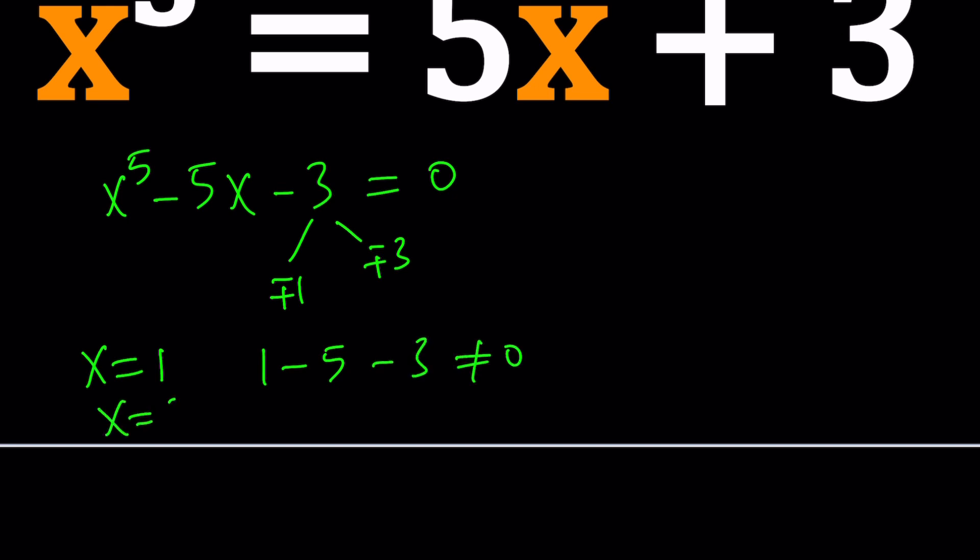x equals 3. 3 to the fifth power is 243 minus 15 minus 3 does not equal 0. You can test similarly negative 1 and negative 3, but none of them are going to be solutions.